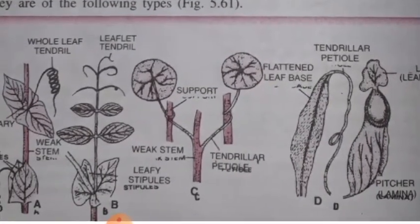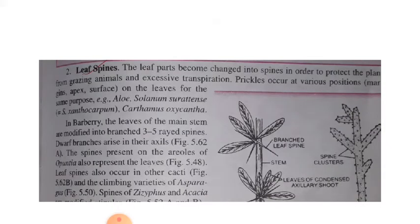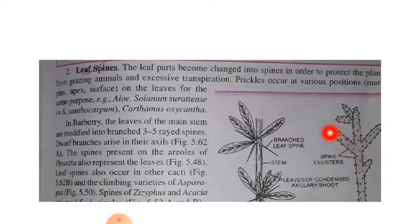The second type is leaf spines. Leaf parts become changed into spines in order to protect the plant from grazing animals and to reduce excessive transpiration. Their main function is to reduce the transpiration loss of water. This is usually observed in desert or dry condition plants. Spines also give the plant protection from grazing animals.